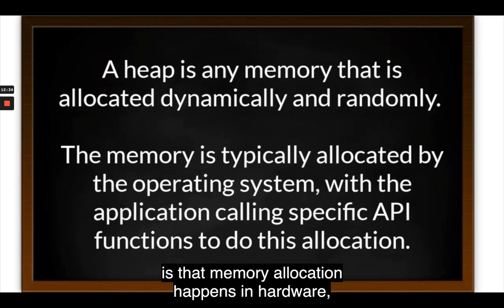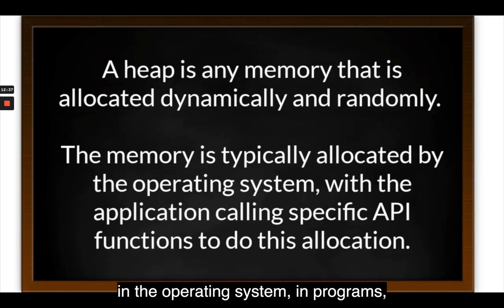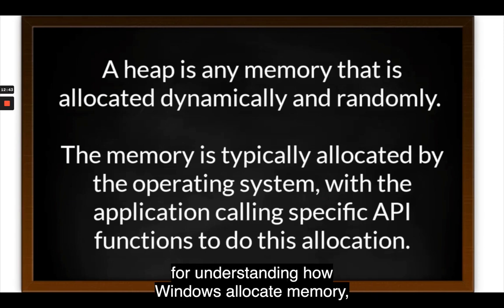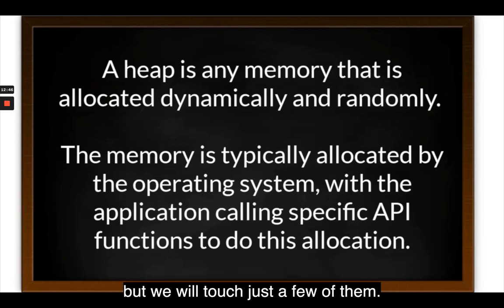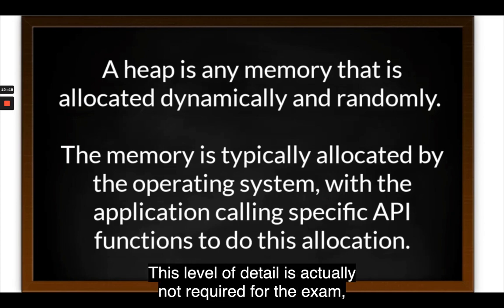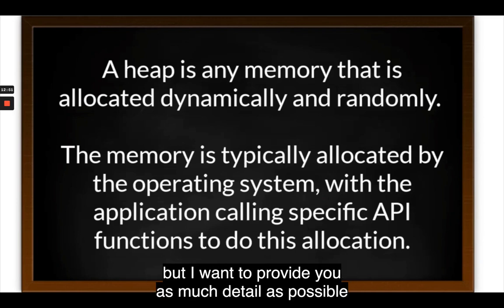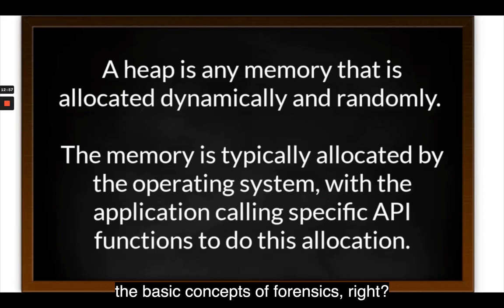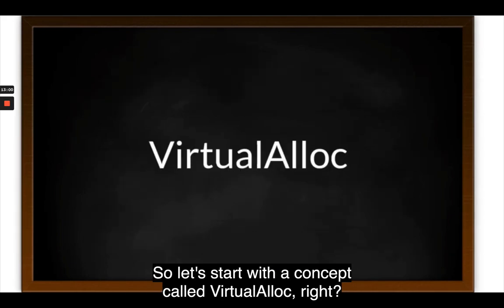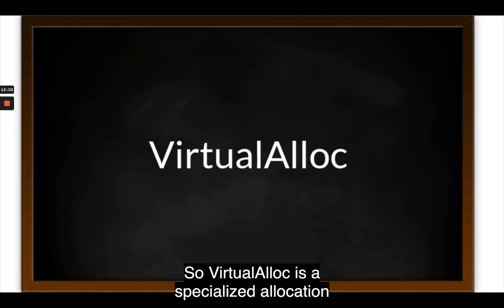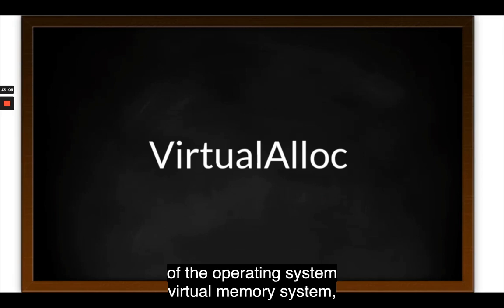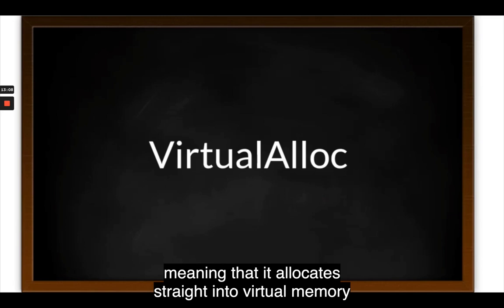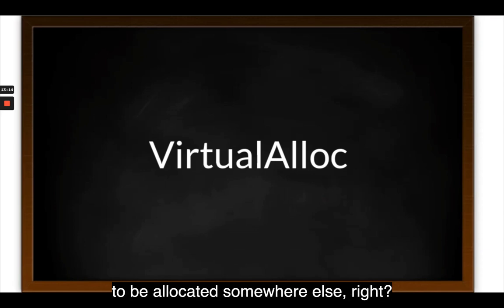Memory allocation happens in hardware, in the operating system, in programs, and in applications. There are deeper concepts for understanding how Windows allocates memory, but we'll touch on just a few. Virtual alloc is a specialized allocation of the operating system's virtual memory system, meaning it allocates straight into virtual memory while reserving blocks of memory to be allocated elsewhere.